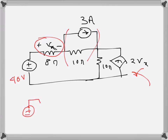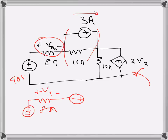Doing that conversion, this resistance is 8 ohms and Vx is the voltage here. The current source polarity is in this direction, so the voltage source will drive the current in the same direction, and the value will be 10 times 3, that is 30 volts. Here is 10 ohms.